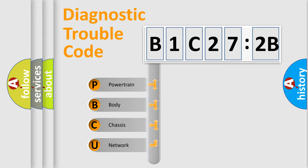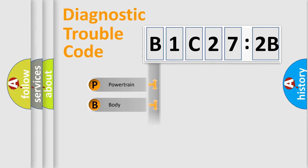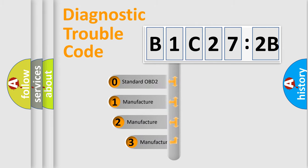We divide the electric system of automobiles into four basic units: Powertrain, Body, Chassis, and Network. This distribution is defined in the first character code.